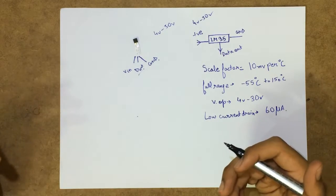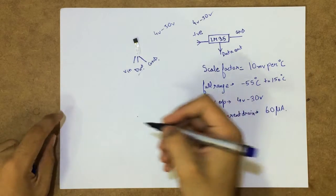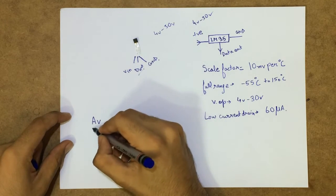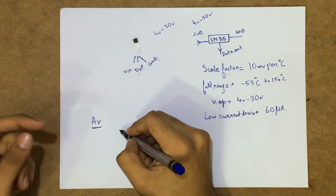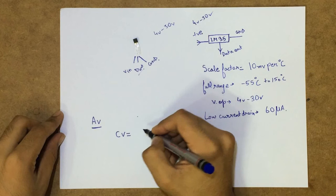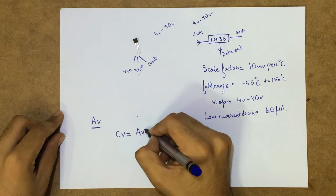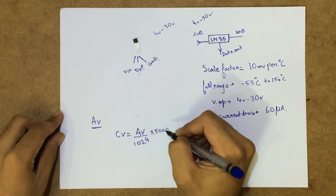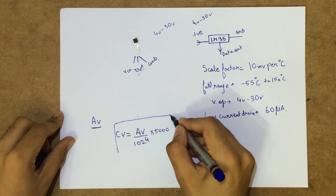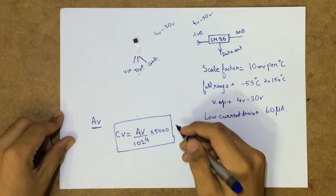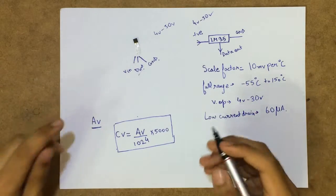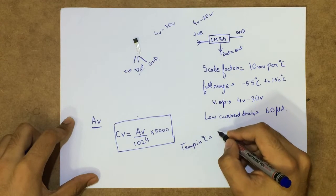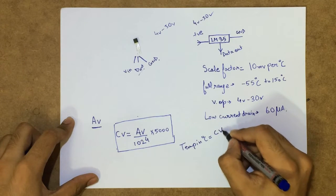So now let's get on to the algorithm part. We'll get an analog value, let's call that value AV for now. So this is the analog value and now we'll calculate another value, let's call that CV. So CV will be AV upon 1024 into 5000. So now we've got this CV value. And now let's get the temperature value in Celsius. So the temperature in Celsius will be this CV value upon 10.